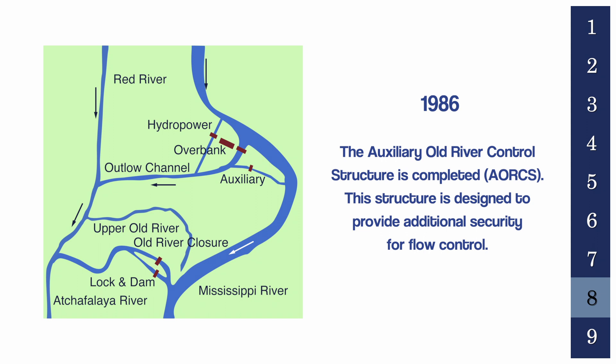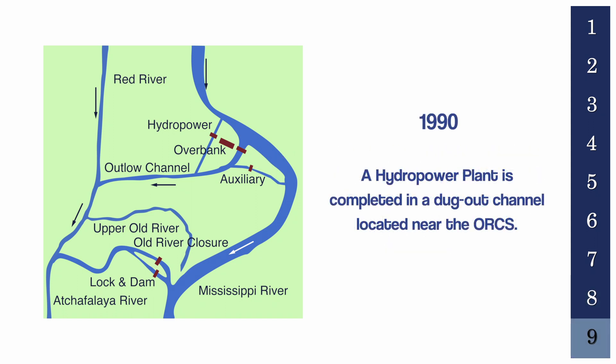In 1986, the Auxiliary Old River Control Structure, or AORCS, was completed. This structure was designed to provide additional security for flow control. In 1990, a hydropower plant was completed in a dugout channel located near the ORCS.